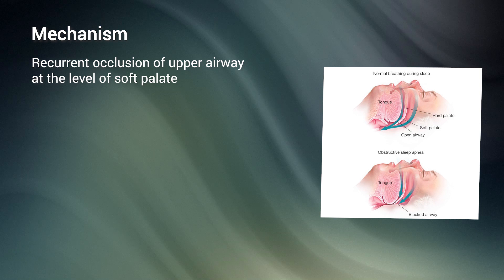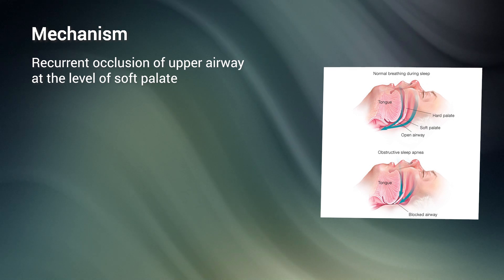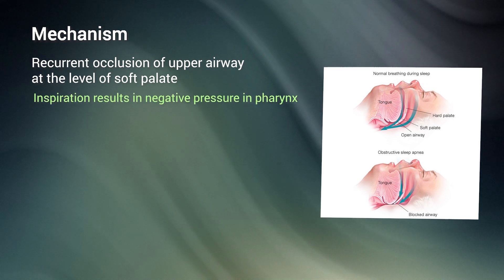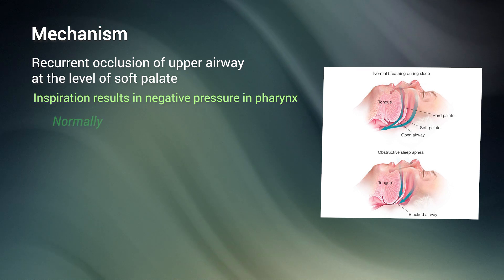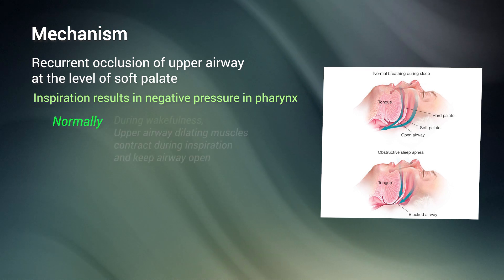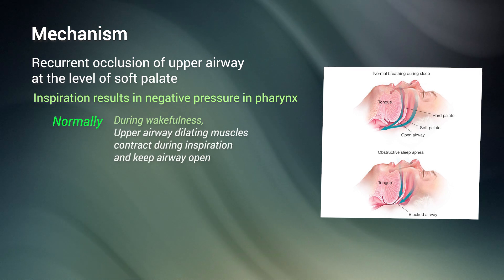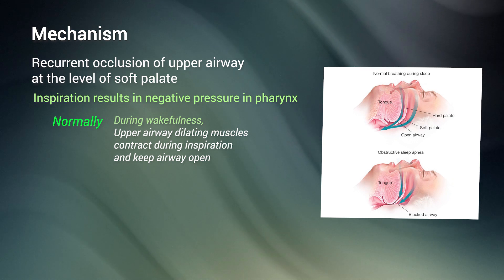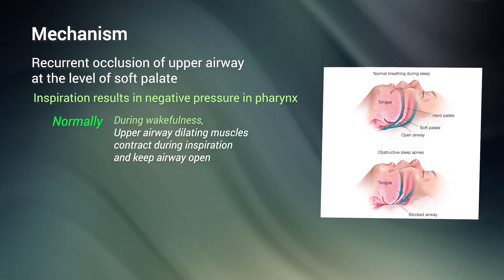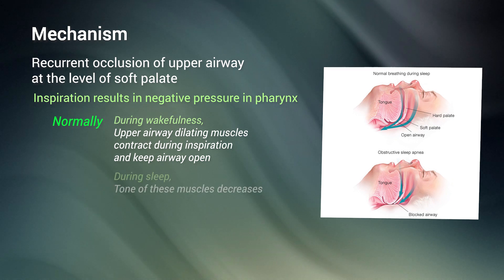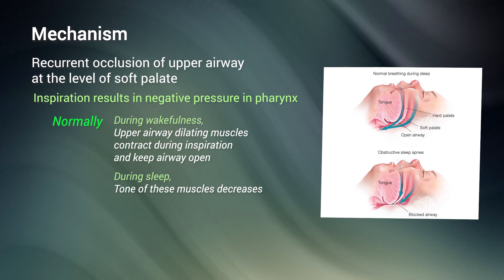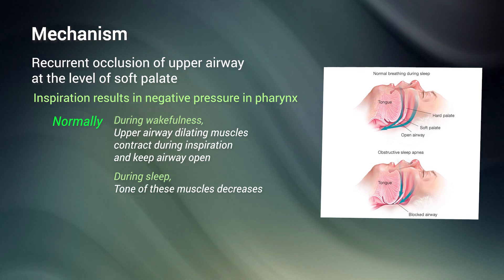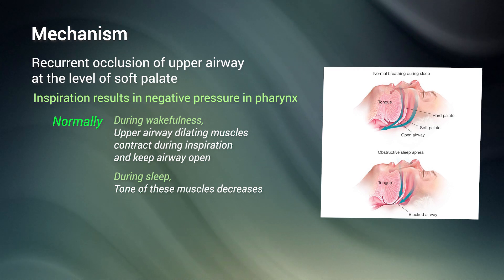What normally occurs in every individual is that inspiration results in negative pressure within the pharynx. During wakefulness, upper airway dilating muscles contract actively during inspiration and keep the airway patent. During sleep, however, muscle tone declines and pharyngeal patency during inspiration is impaired.